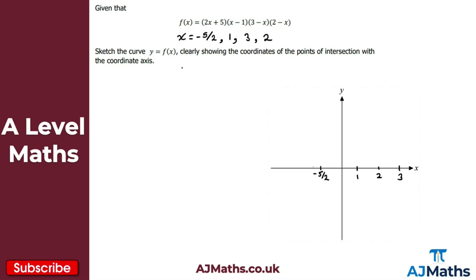We also need the y-intercept e. We take the integer value from each bracket — and these don't have to be integers; if it were a fraction like 1 over 2 we'd still multiply by 1 over 2. So we calculate 5 × (−1) × 3 × 2: that's 5 × (−1) = −5, × 3 = −15, × 2 = minus 30. For the general shape, 2x × x × (−x) × (−x) gives 2x⁴, so we have a positive quartic and the W-shape.